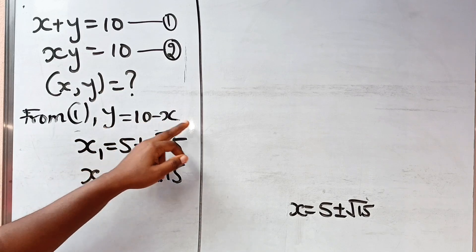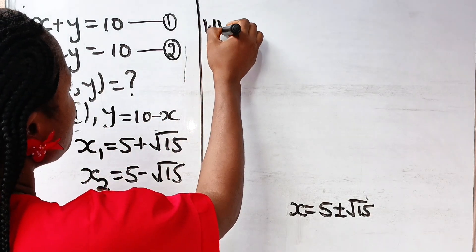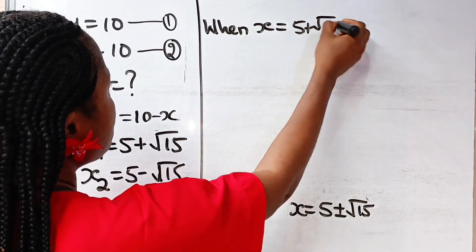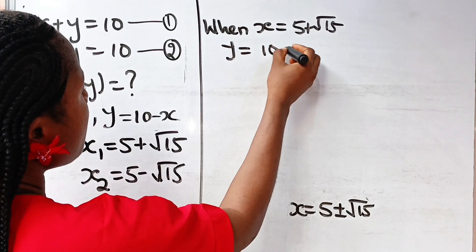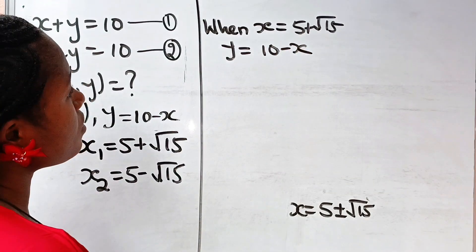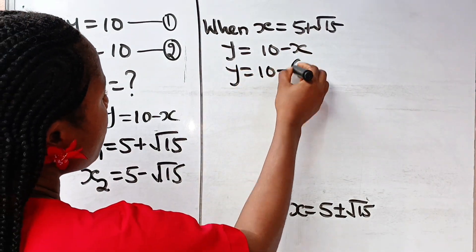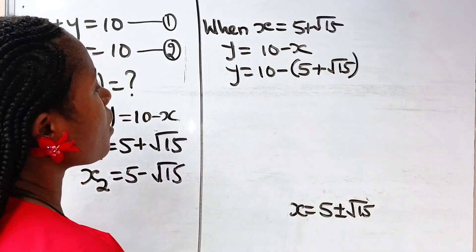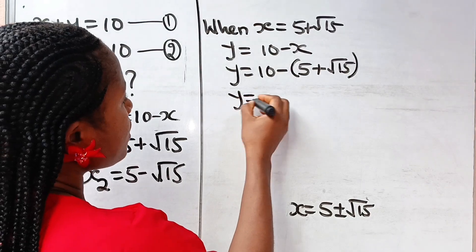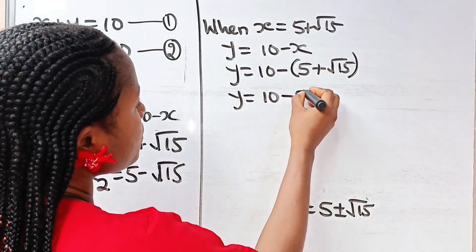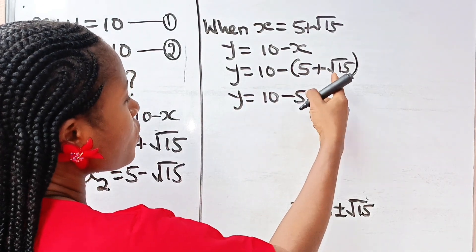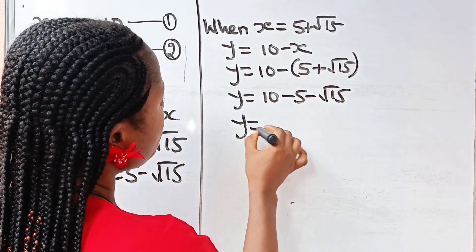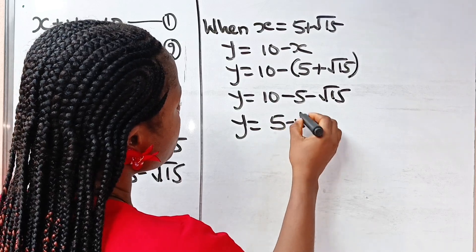For case 1, when x is equal to 5 plus root 15, y is equal to 10 minus x, so y is equal to 10 minus (5 plus root 15). That gives us 10 minus 5 minus root 15, so y is equal to 5 minus root 15.